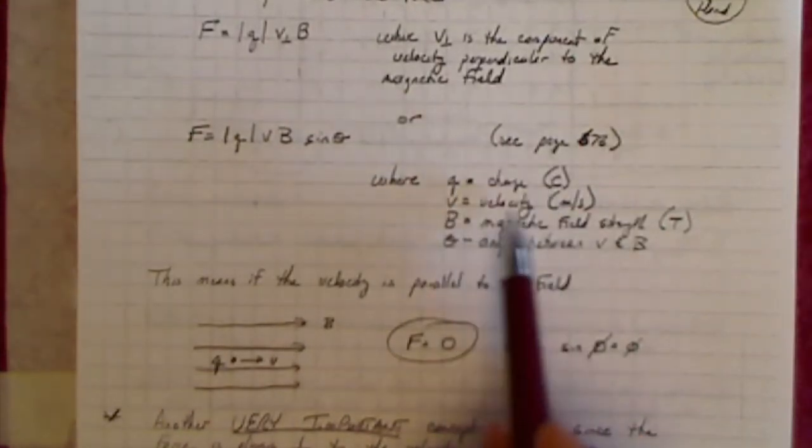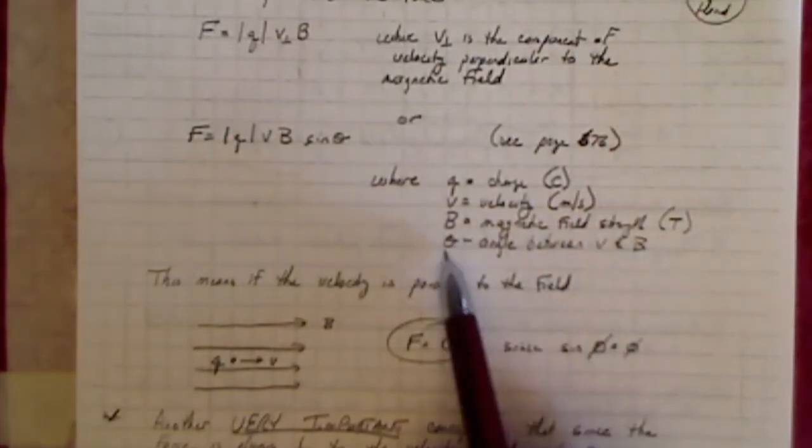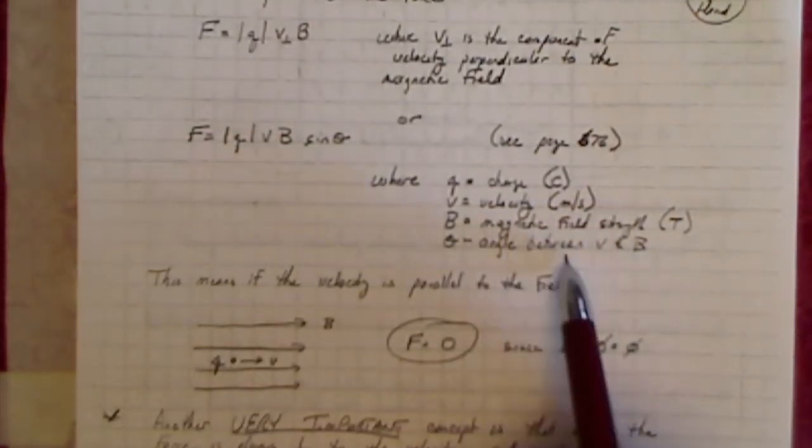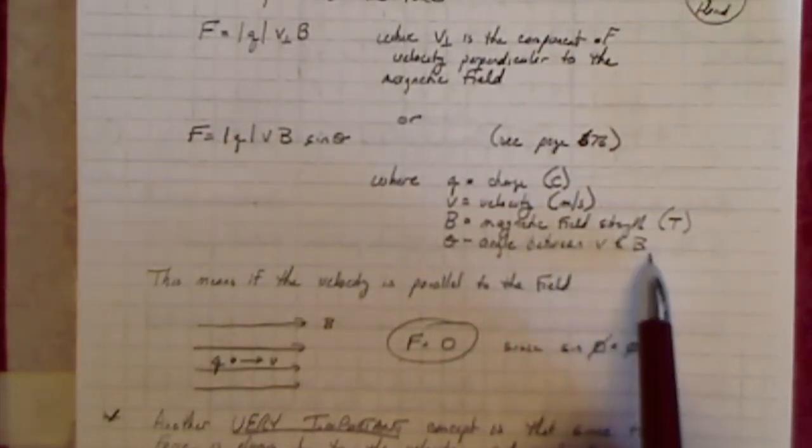Where Q is your charge, V is the velocity in meters per second, B is your magnetic field strength in Tesla, and theta is the angle between your velocity and the magnetic field.